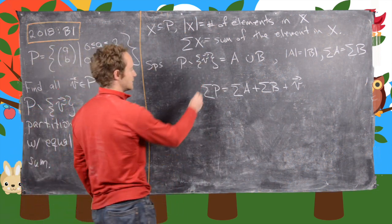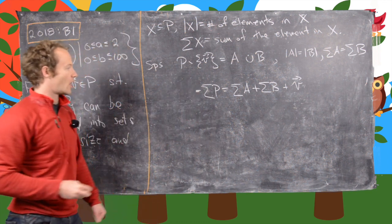We have the following properties: the number of elements in A equals the number of elements in B, and the sum of elements in A equals the sum of elements in B. From this, it follows that the sum of elements in P is the same as the sum of elements in A plus the sum of elements in B plus this vector V that was extracted.